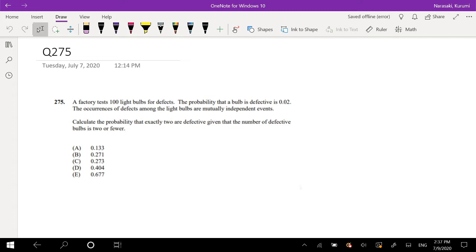A factory tests 100 light bulbs for defects. The probability that a light bulb is defective is 0.02. So out of 100, 0.02 is defective. That means it's about 2 of them out of 100.